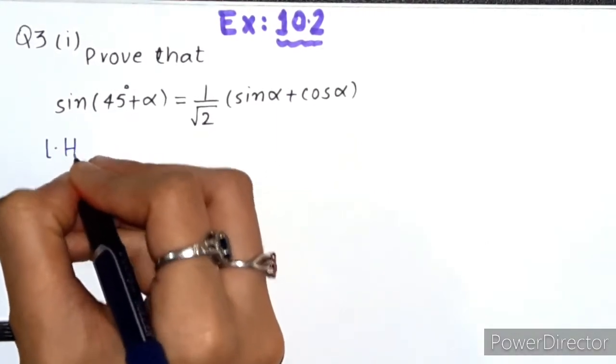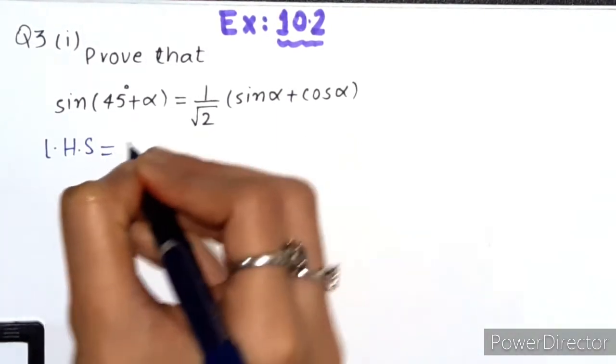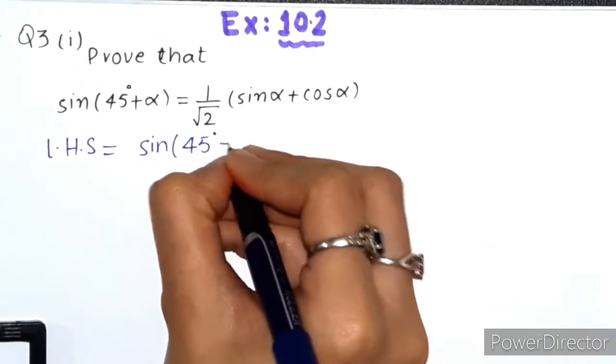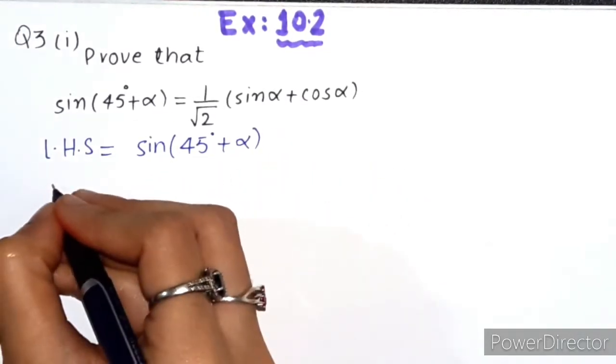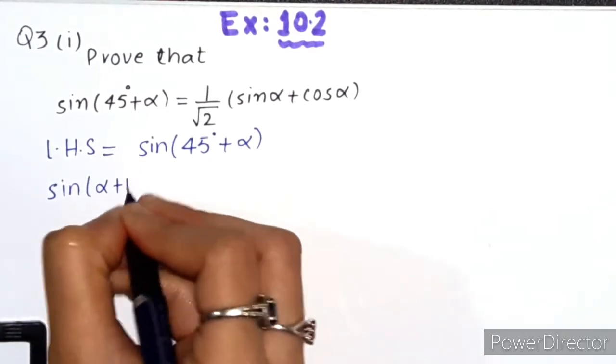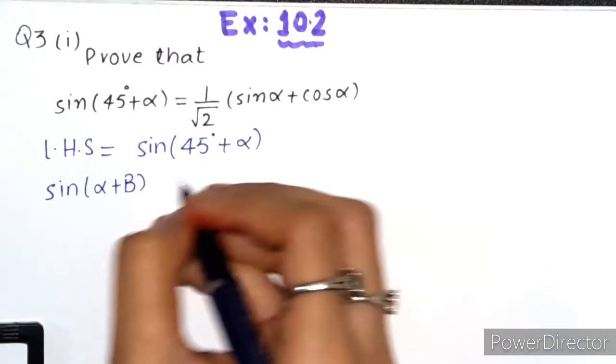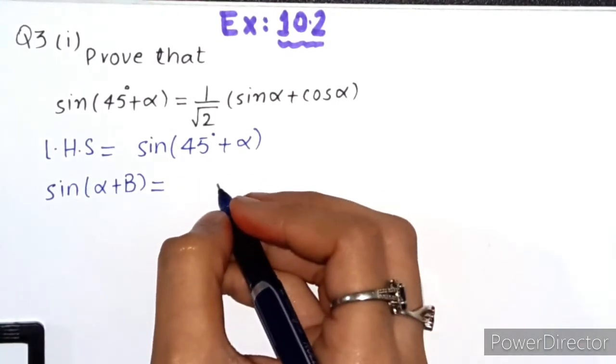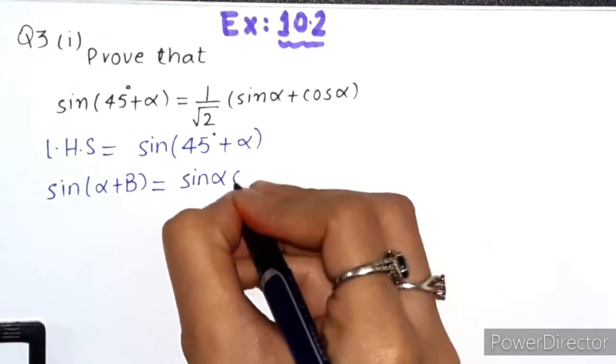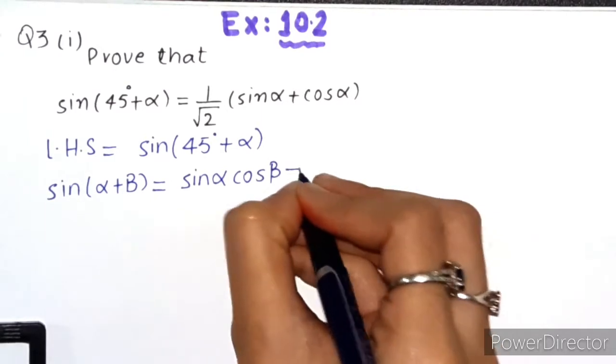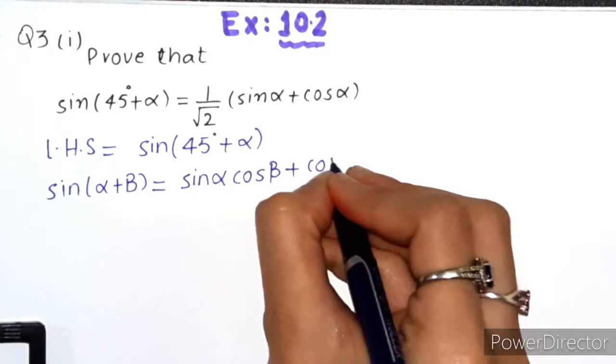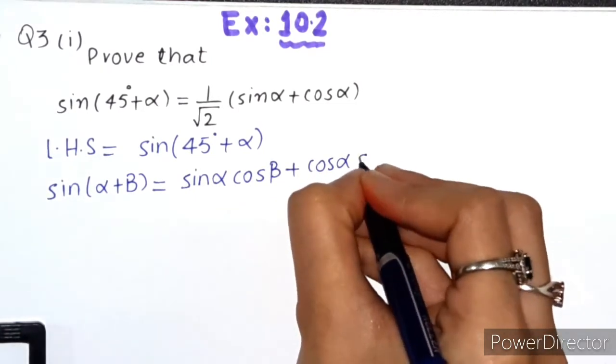We'll take the left hand side, which is sin(45° + α). We will use the formula sin(α + β). We'll consider this as α and this as β. The formula is sin(α + β) equals sin α cos β plus cos α sin β.